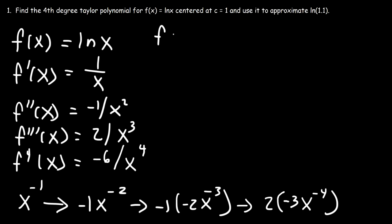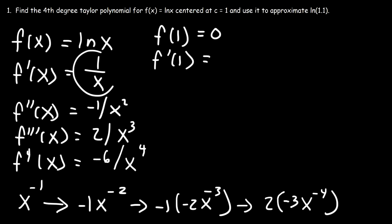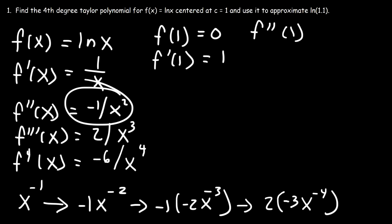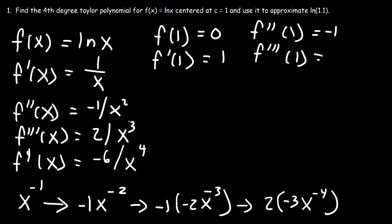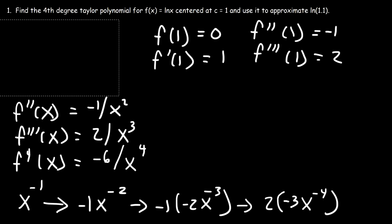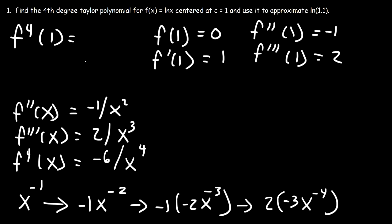Now we evaluate at c = 1. f(1) = ln(1) = 0. f'(1) = 1/1 = 1. f''(1) = -1/1² = -1. The third derivative at 1 is 2/1³ = 2. And the fourth derivative at 1 is -6/1⁴ = -6.